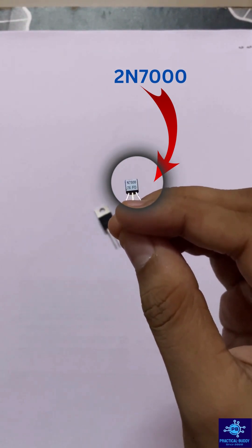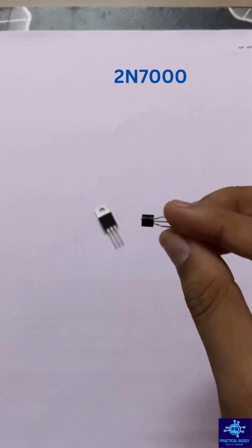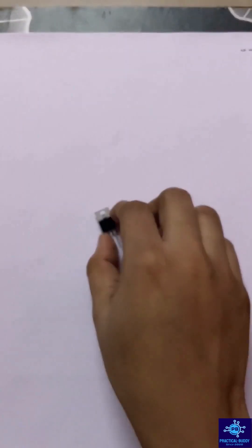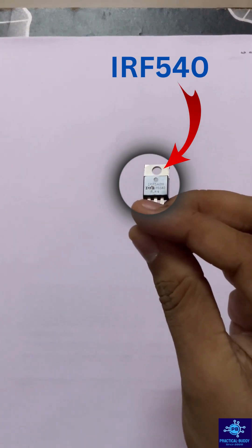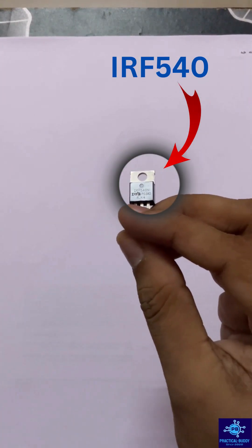Just note down its model number, that is 2N7000. The second MOSFET that we are going to compare is this one, that is IRF540. As you can clearly see here, this is IRF540.